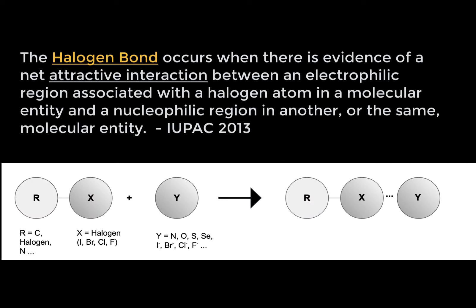Halogen bonds occur when there is evidence of a net attractive interaction between an electrophilic region associated with a halogen atom in one molecular entity and a nucleophilic region in another or the same molecular entity.